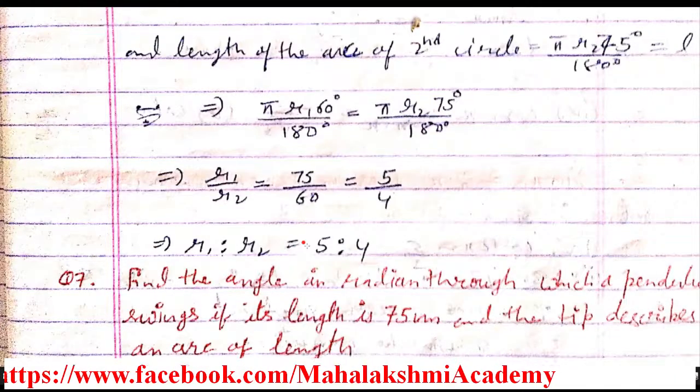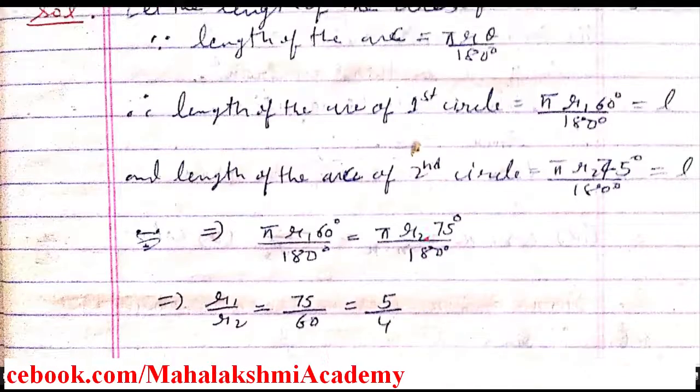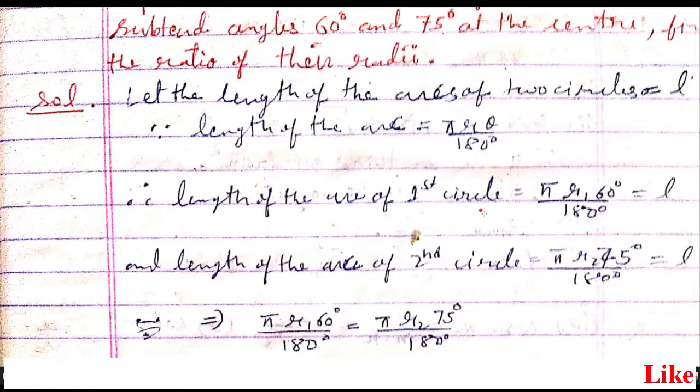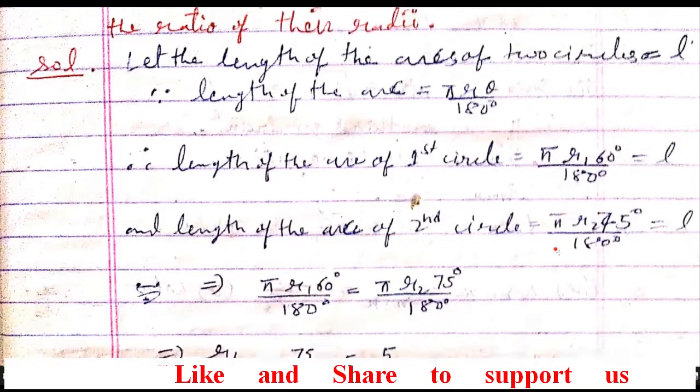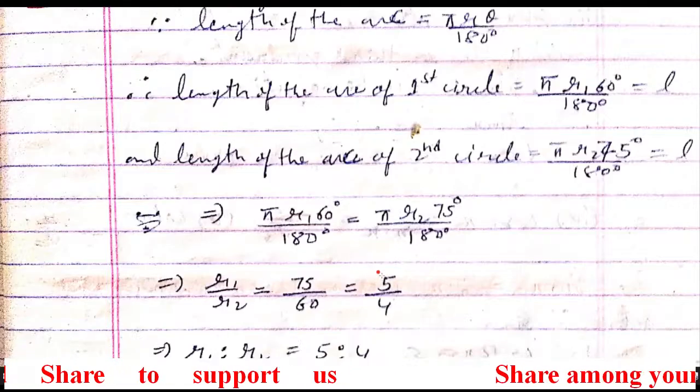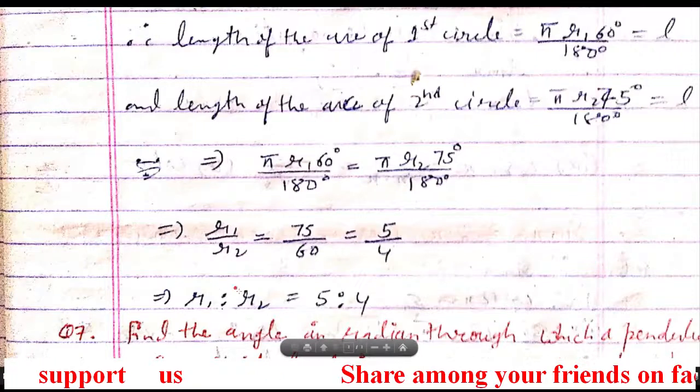So how we have done this? By this information, the length of arcs are same. We calculated the length of arc of first circle and length of arc of second circle by the 10th class formula πrθ/180. Since both the arc lengths are same, we kept them equal. And from there, we got the ratio r₁ and r₂.